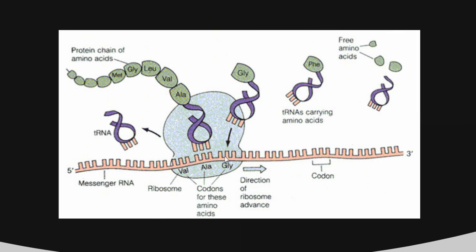Here we have the messenger RNA, and the large blue molecule is our ribosome. We've got codons being read, and the ribosome is bringing in the proper matching codon and anticodon. The transfer RNA on the other side has an amino acid. When two amino acids are next to each other, they will be bonded, and we get a long chain of amino acids. Notice that the transfer RNA that gets released no longer has an amino acid — it will float around in the cell, find a free-floating amino acid that matches its anticodon, and bond to it, ready to bring in new amino acids.